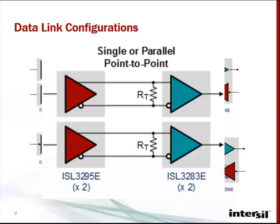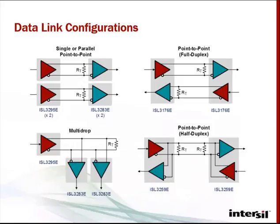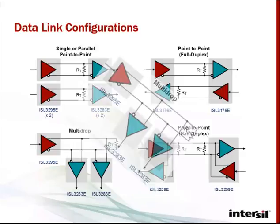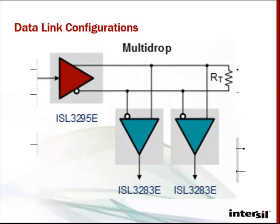Parallel point-to-point links are found in applications with multiple clock-synchronized high-speed data channels. Multi-drop links are used for legacy RS-422 applications and clock-distributive networks.